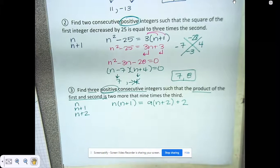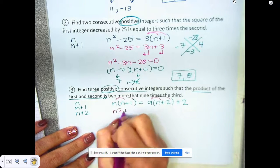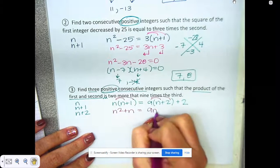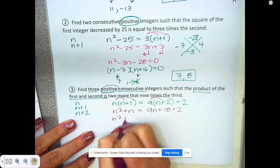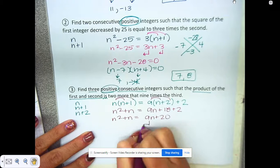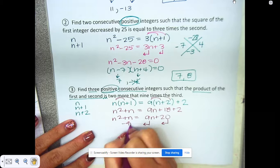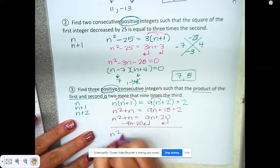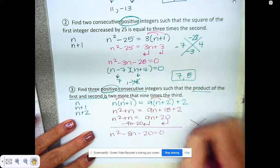I'm going to simplify this out and I'm going to leave you to do the rest of the math. That would give me n squared plus n, 9n plus 18 plus 2. Then we want to move everything to the left, so I'm going to subtract 9n and subtract 20, which is going to give me n squared minus 8n minus 20 is equal to zero.